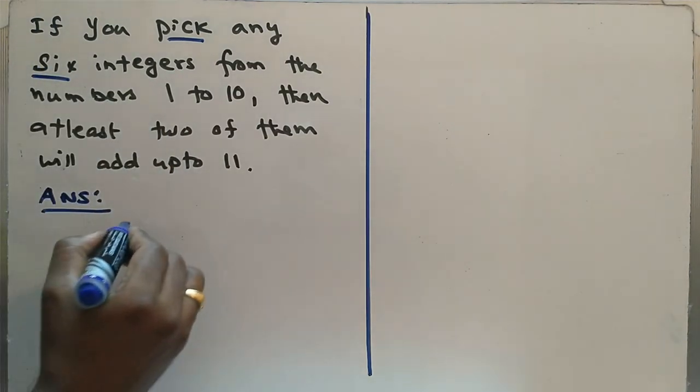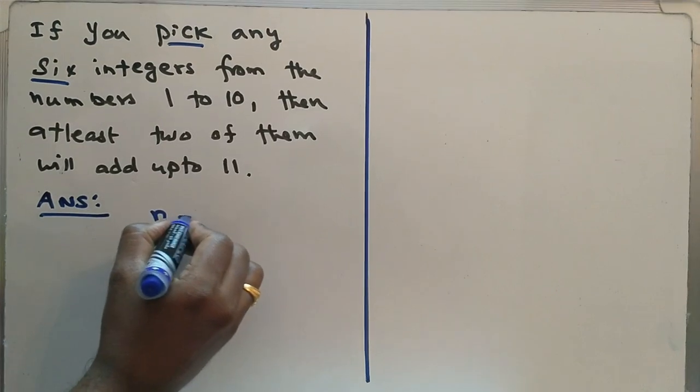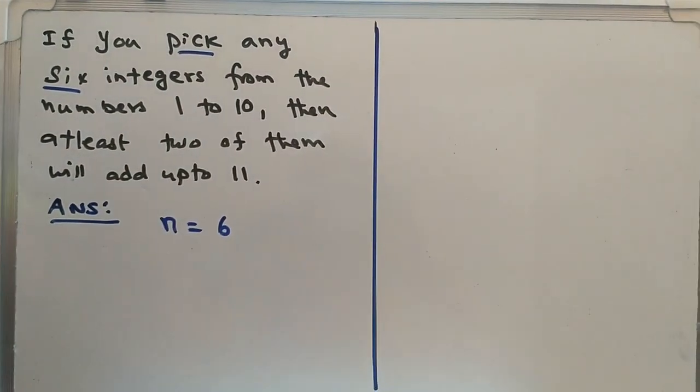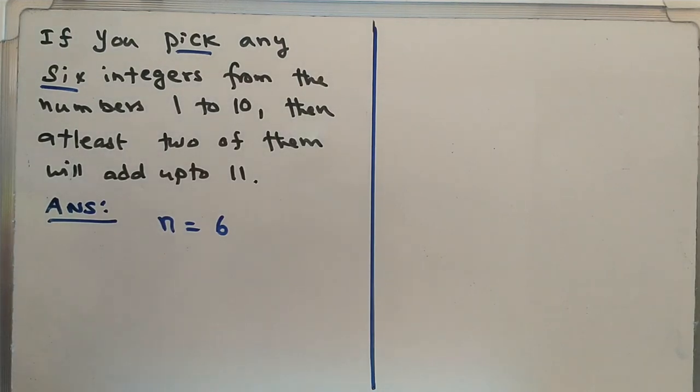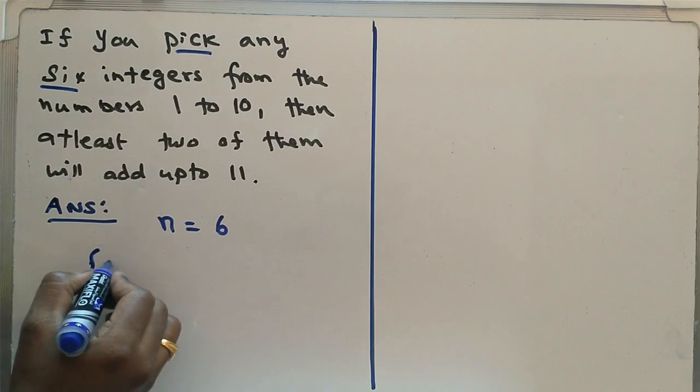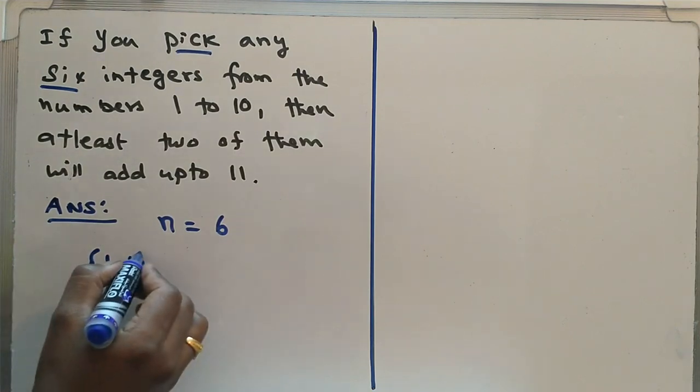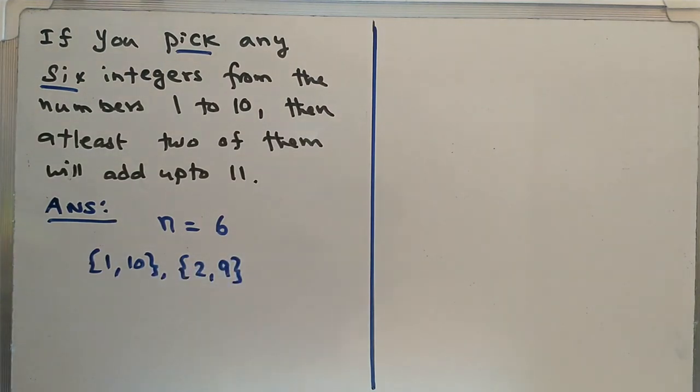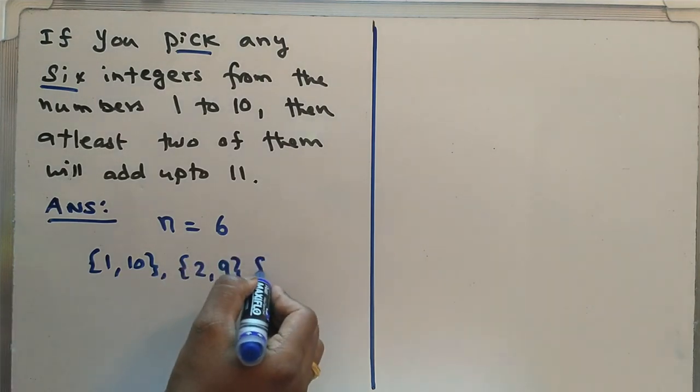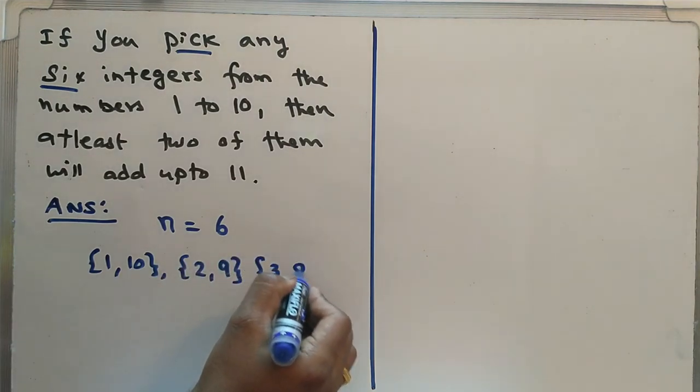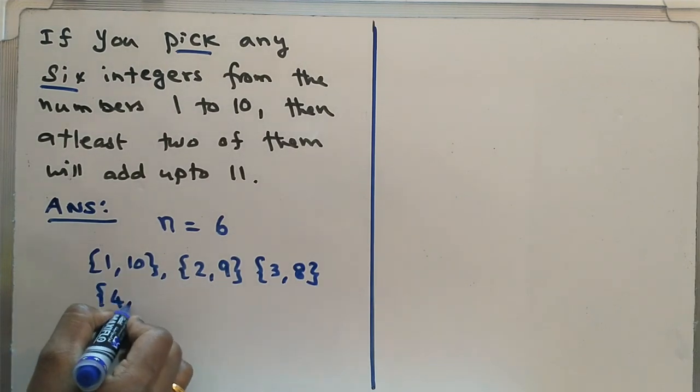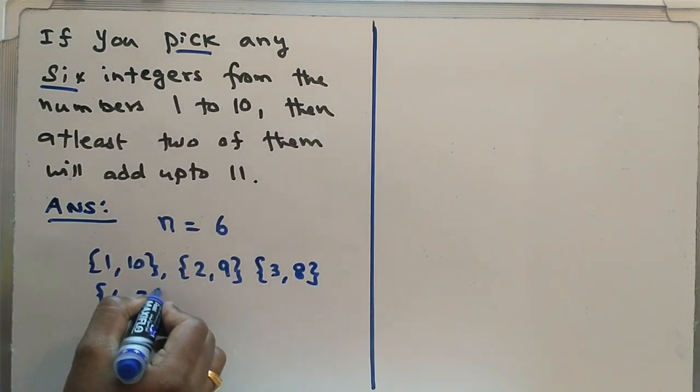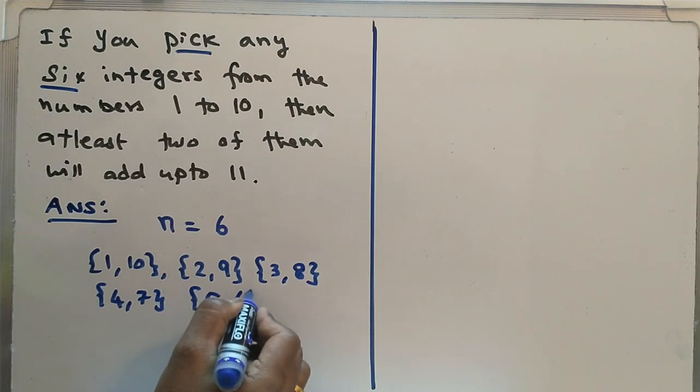Now what is the pigeon holes? The idea is to get a sum of 11. So now let us think about from 1 to 10 how we can get 11. So if you add the number 1 with 10, you get 11. Then if you get the number 2 and 9, if you add the numbers 2 and 9, the total will be 11. Similarly 3, 8 will be add up to 11. Then 4, 7 will be add up to 11. Then 5, 6 will be add up to 11.